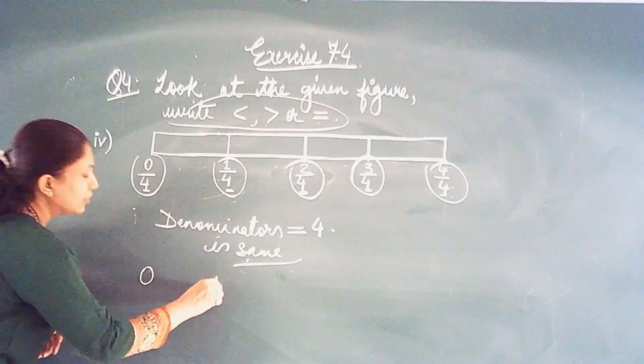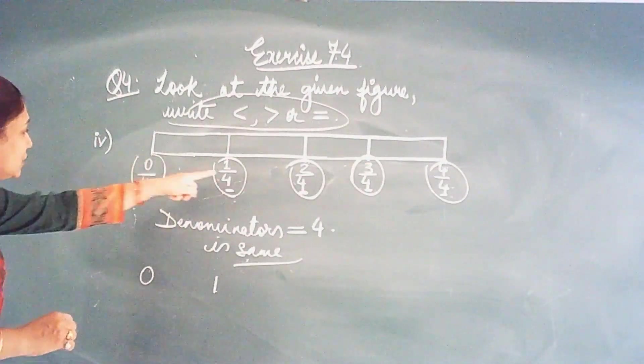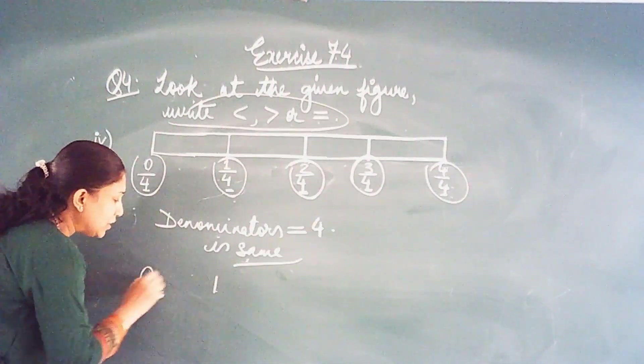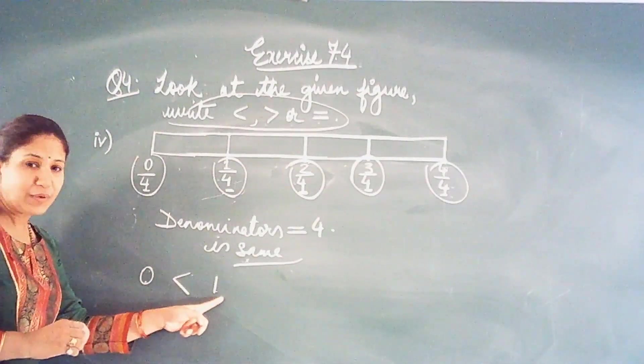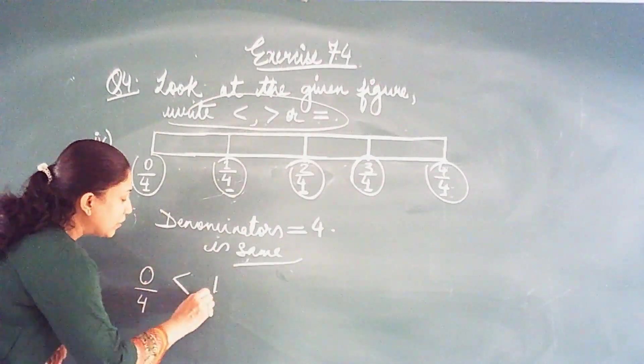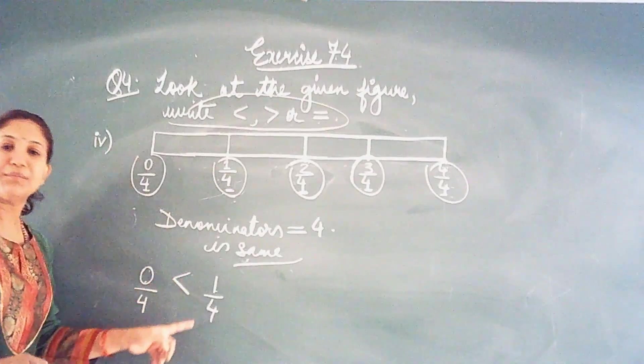Let us see the first one. 0 and 1. Now 0 and 1, what do you see? 0 is less than 1. Correct? So 0 upon 4 will be also less than 1 by 4.